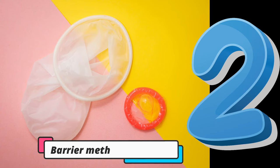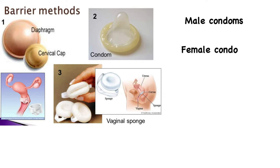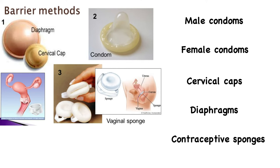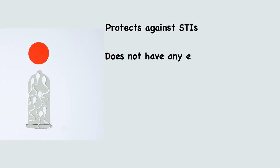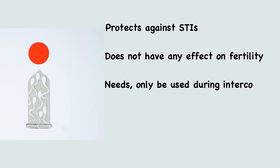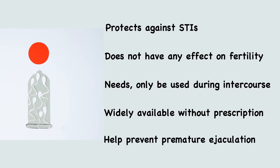The second method is the barrier method. This includes male condoms, female condoms, cervical caps, diaphragms, and contraceptive sponges. The advantages include that it protects against sexually transmitted infections, has no effect on fertility, and only needs to be used during sexual intercourse. Barrier methods are widely available without a prescription and can help prevent premature ejaculation in men.